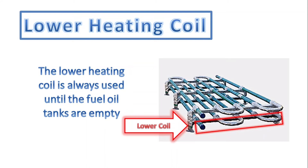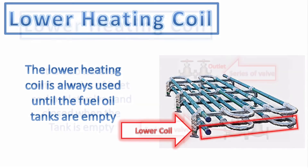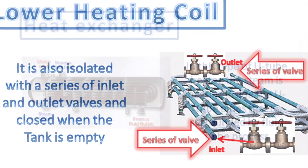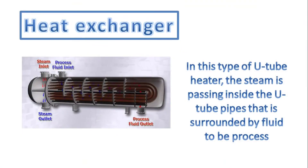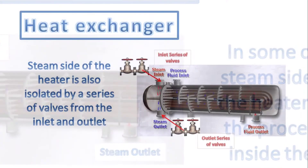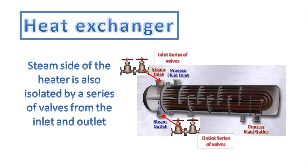The lower heating coils are installed in the bottom part of the tank and are normally always in use until the tank is empty. They are also isolated with valves at both inlet and outlet. Aside from heating coils, the steam distribution system is also equipped with heat exchangers that heat a liquid faster while it circulates under pump pressure. Like the heating coil, it is also isolated with a series of valves to stop steam when the system is not in use.